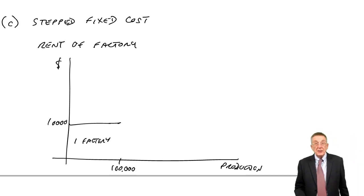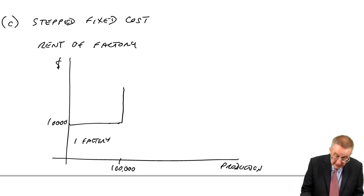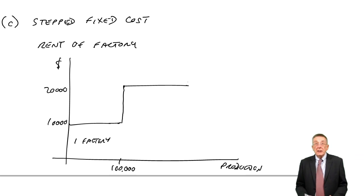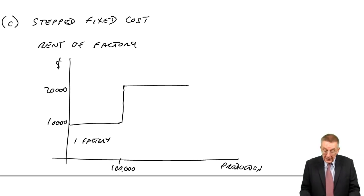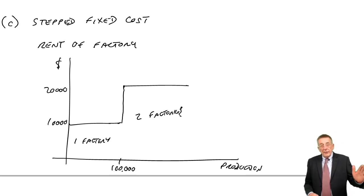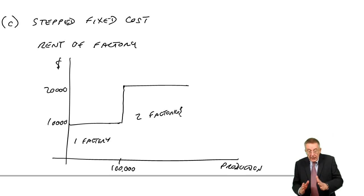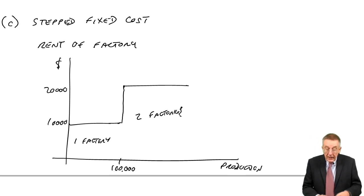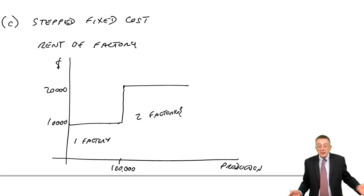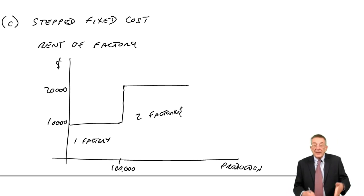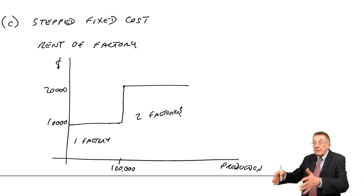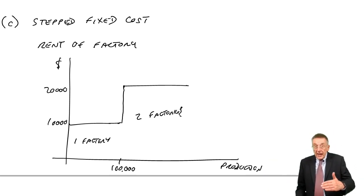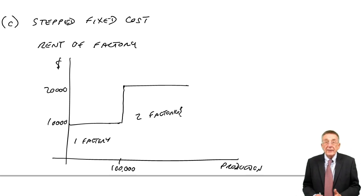If we started to produce more than 100,000, we'd need a second factory. So up to 100,000, we just need one factory, we're paying $10,000. Over 100,000, all of a sudden we need two factories, and it's then going to be fixed at 20,000. So if you have a fixed cost over a range, up to 100,000 units it's fixed at $10,000. Over 100,000 units, it's fixed at $20,000. We call that a stepped fixed cost.